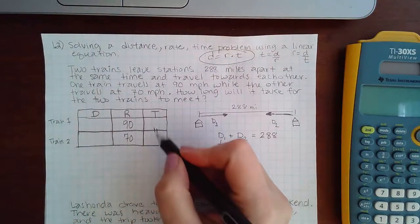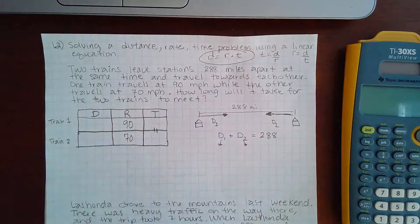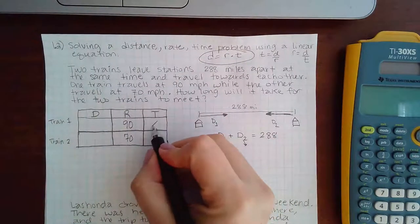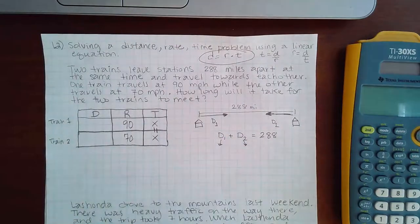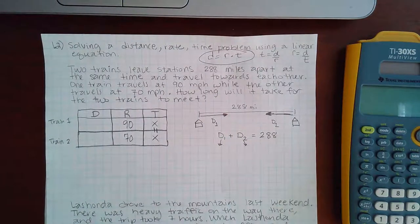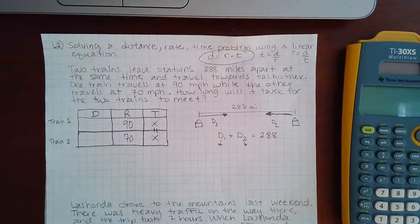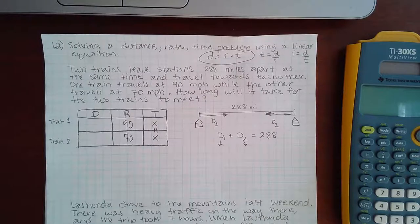So therefore I need to fill in this with something. And since the time is unknown, I'm just going to use X for the time. And I used X for the top and the bottom because it did tell me that they traveled at the same time, so those values should be equivalent to each other.